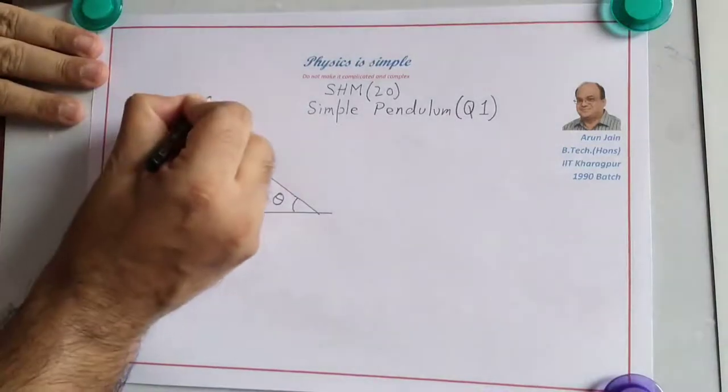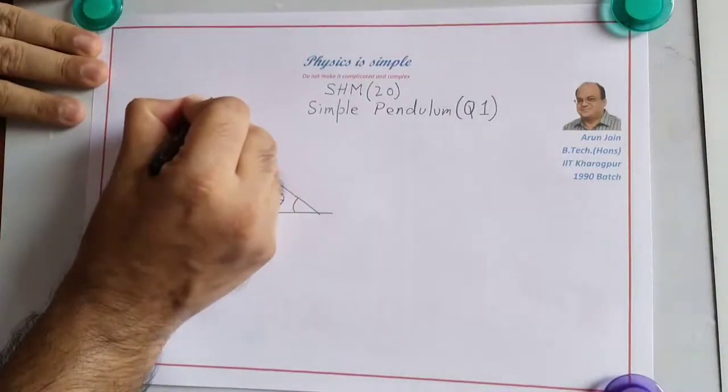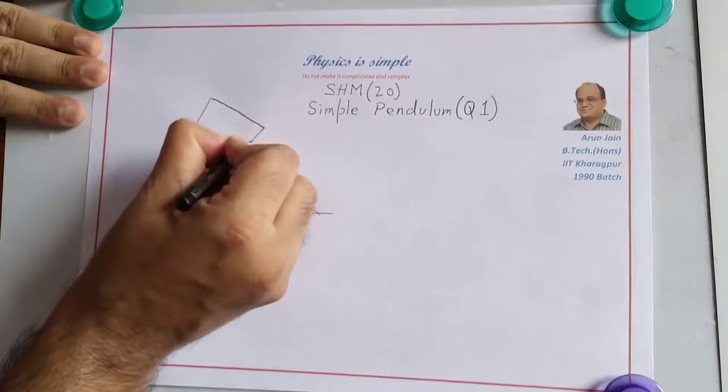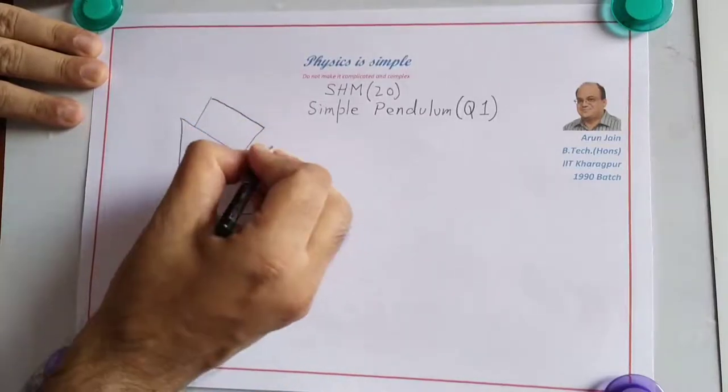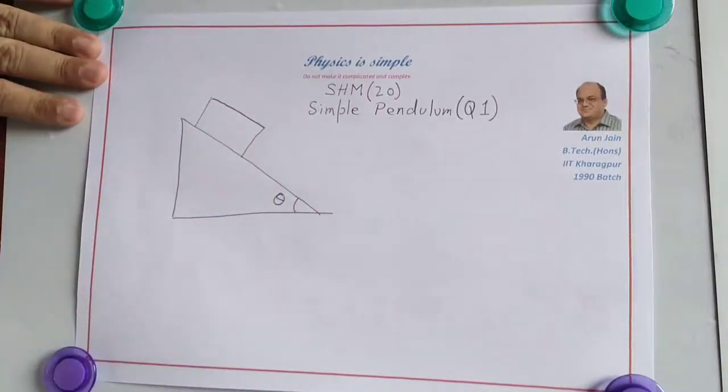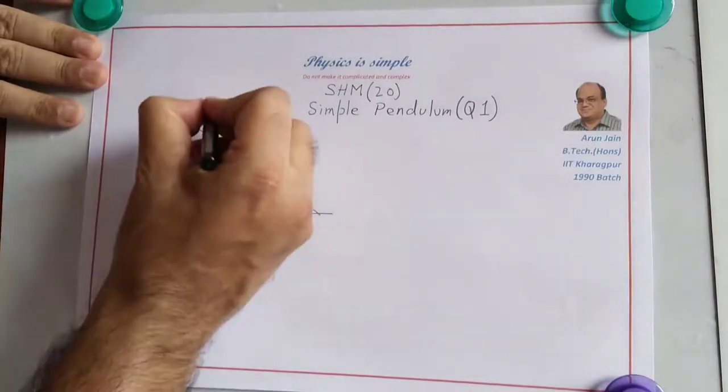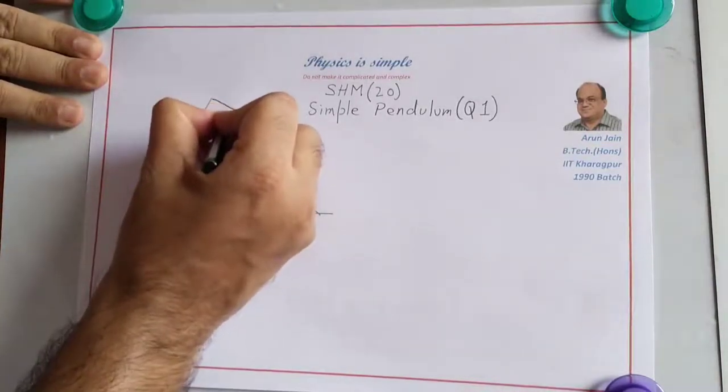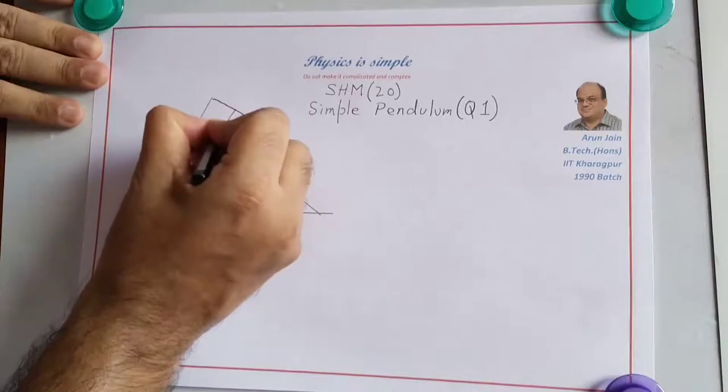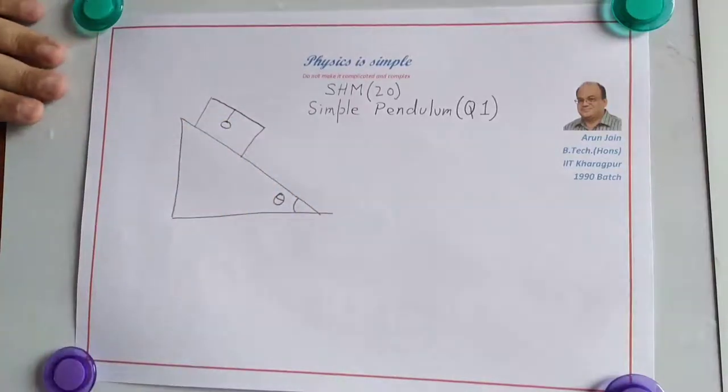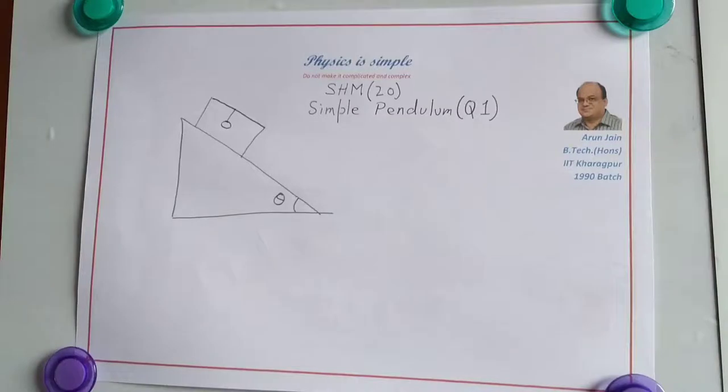And there is a cart, C-A-R-T, that is sliding down without friction. And inside the cart, we have a simple pendulum. We want to find out the time period of the pendulum for small oscillations.